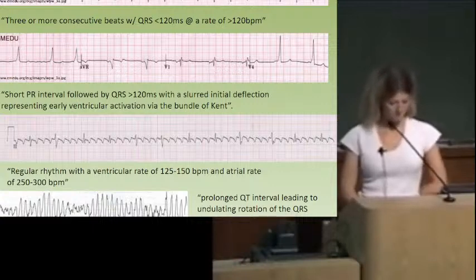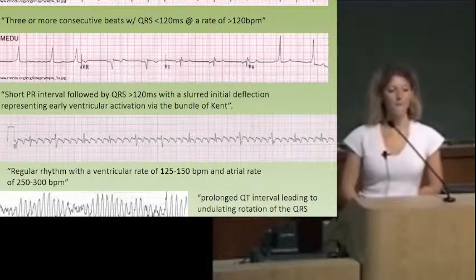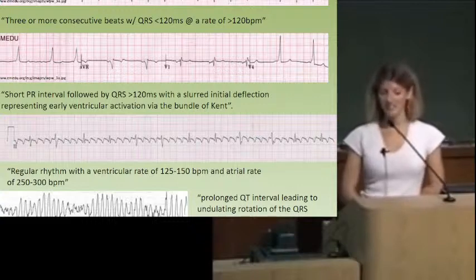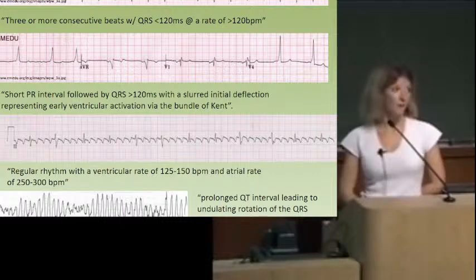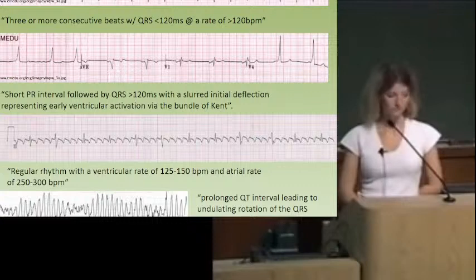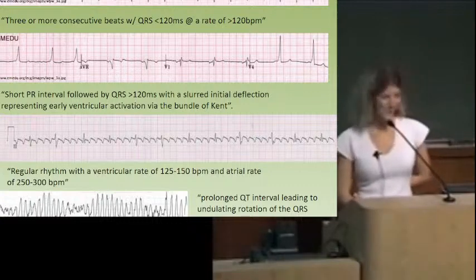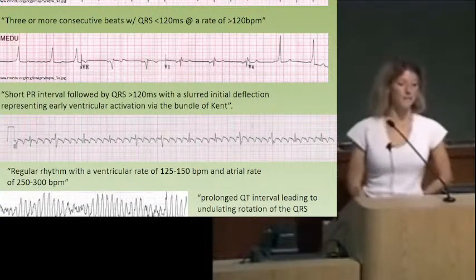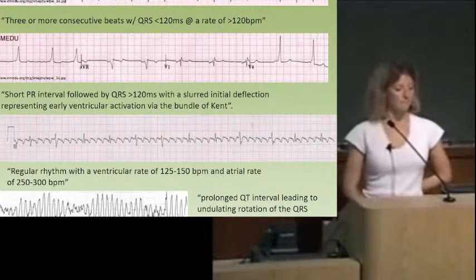Looking at the next EKG: the QRS — is it narrow or wide? They're wide. So it's wide. Is it fast or slow or regular? It's fast. So it's a tachycardia with wide QRS. The description they might give you: three or more consecutive beats with a QRS greater than 120ms at a rate of greater than 120 — that's V-tach.